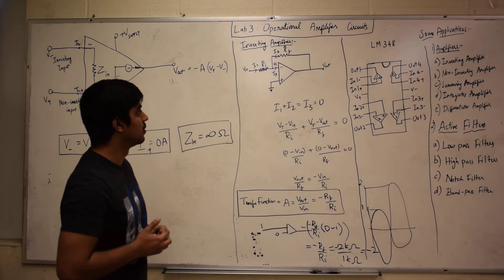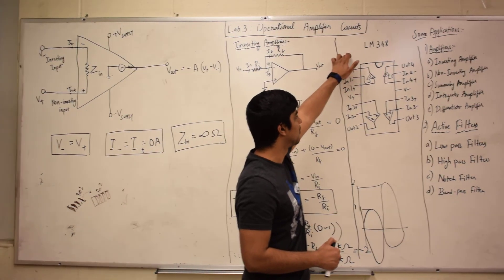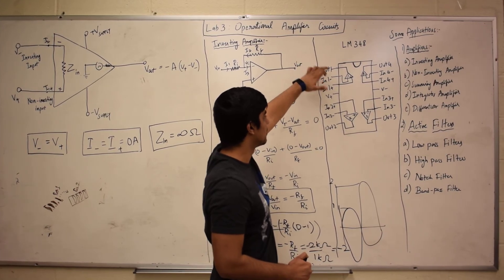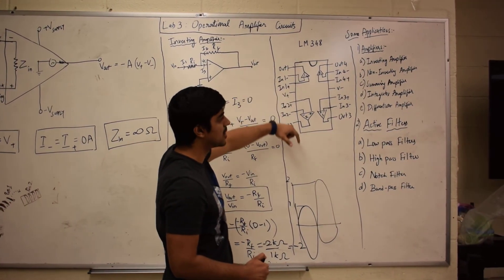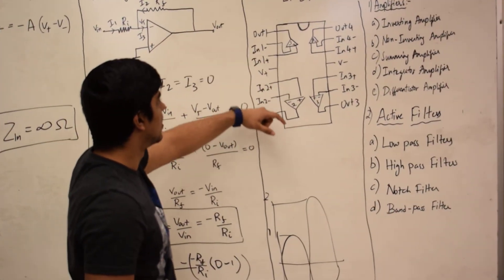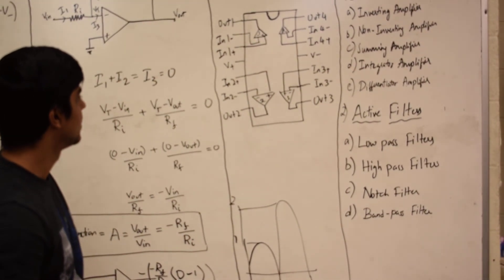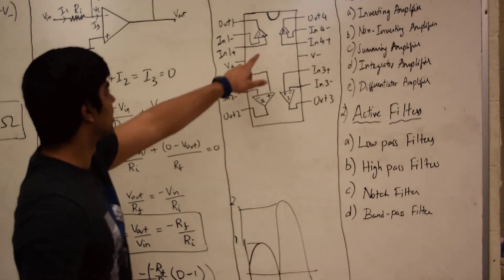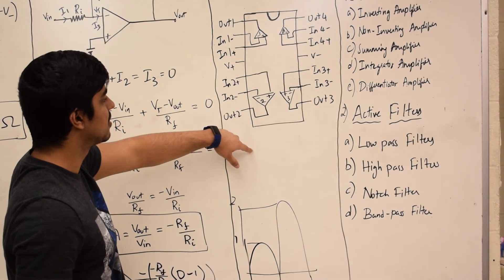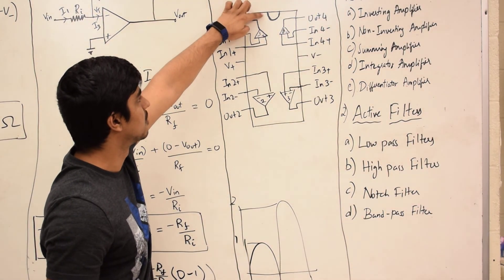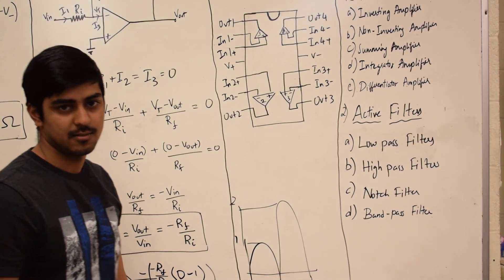For this experiment, we are going to use LM348. Its chip diagram looks like this. It has four op-amps in it. To recognize which direction you are using it, we use the notch to identify the direction.